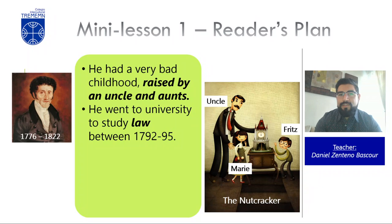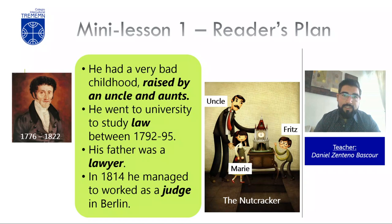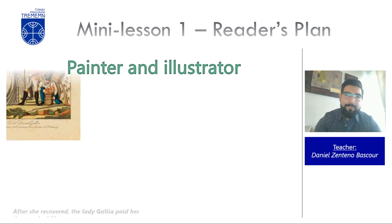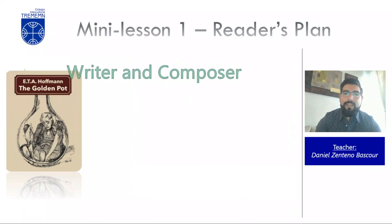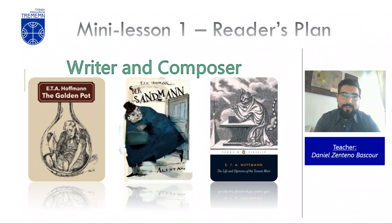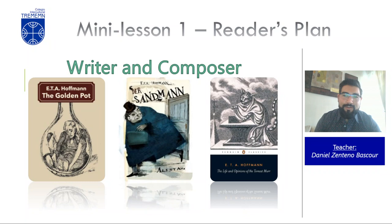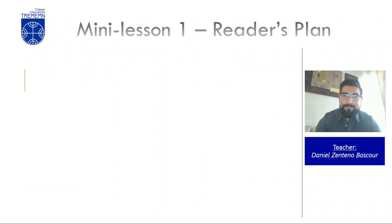Continuing with the biography, Hoffmann went to university to study law, probably following the tradition of his father who was also a lawyer. In 1814 he managed to work as a judge in Berlin, which was a big achievement. He was also a painter and illustrator, and as you can see in his caricatures of political figures, he was very critical. He was also a writer and composer. Some of his other stories include The Golden Pot, a retold classical fairy tale; The Sandman, a story in which a man falls in love with a woman who turns out to be a robot; and The Life and Opinions of Tomcat Murr, an autobiography of a cat.